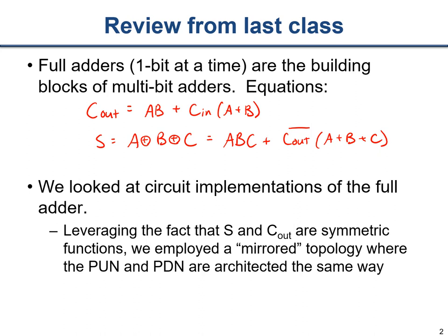We ended up liking that embodiment of the sum calculation simply because it includes c_out, so we can reuse the block computing c_out, invert it, and use it in our sum calculation. Since c_out is on the critical path and sum is not, this was an appropriate way to reuse some hardware. We also looked at what these Boolean expressions look like — they are symmetric functions, so we could employ a mirrored topology where both the pull-up and pull-down networks are the same.